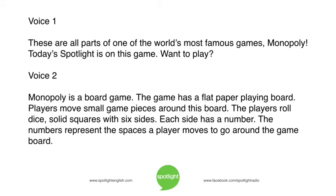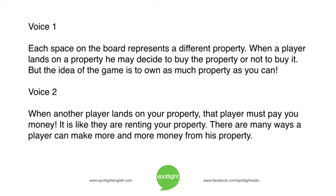Monopoly is a board game. The game has a flat paper playing board. Players move small game pieces around this board. The players roll dice — solid squares with six sides. Each side has a number. The numbers represent the number of spaces a player moves to go around the game board. Each space on the board represents a different property. When a player lands on a property, he may decide to buy the property or not to buy it. But the idea of the game is to own as much property as you can.